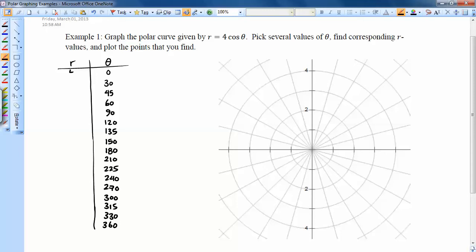So this is 4. When it's 30 degrees, it's 3.46. When it's 45 degrees, it's 2.83. When it's 60 degrees, it's 2. When it's 90 degrees, we get R equals 0. When it's 120 degrees, negative 2, then negative 2.83, negative 3.46, negative 4 for 180 here.